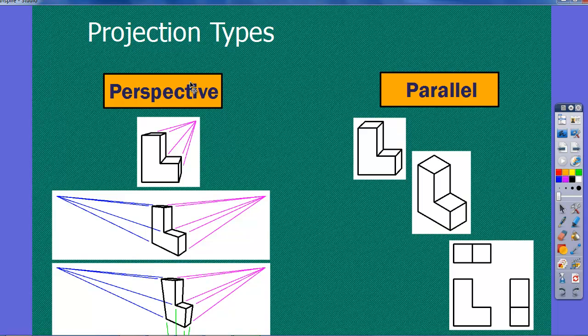We have perspective projections and we have parallel projections. In perspective, all the lines are kind of going back to points that are in common. In parallel projection, the points going back are all parallel. So those are parallel, those are parallel, those are parallel, and here everything's parallel.